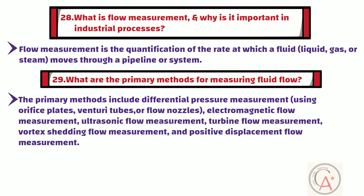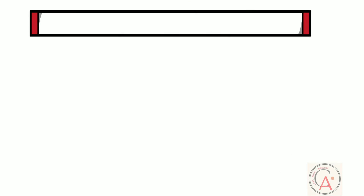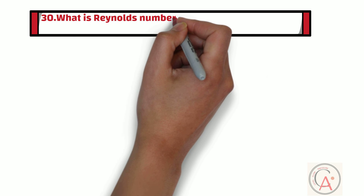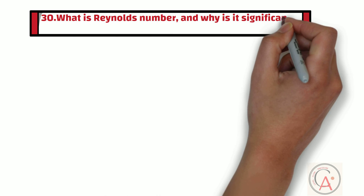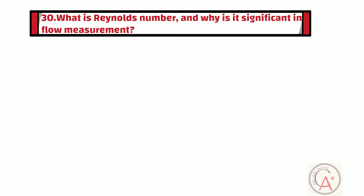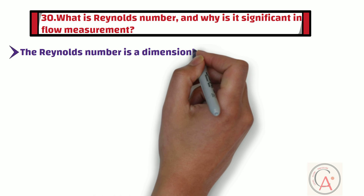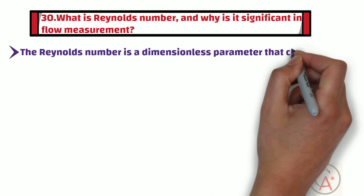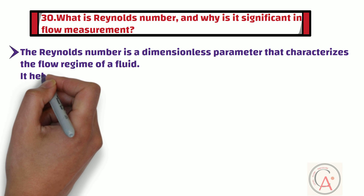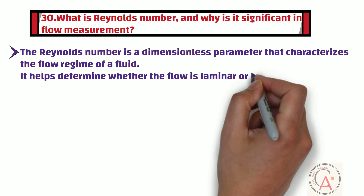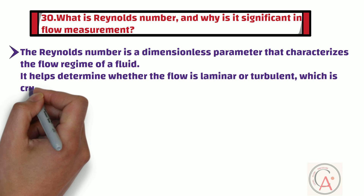The 30th question is: what is Reynolds number and why is it significant in flow measurement? The Reynolds number is a dimensionless parameter that characterizes the flow regime of a fluid. It helps determine whether the flow is laminar or turbulent, which is crucial in selecting the appropriate flow measurement technique.